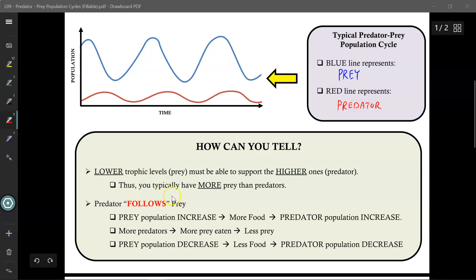Another way to determine which line represents which is to remember this phrase: predator follows prey. Just like the wolf follows the deer—you'll never see the deer following the wolf—the predator population will always follow the prey population.